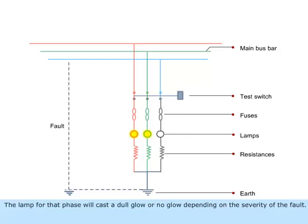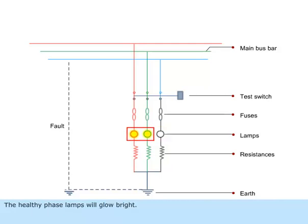The lamp for that phase will cast a dull glow or no glow depending on the severity of the fault. The healthy phase lamps will glow bright.